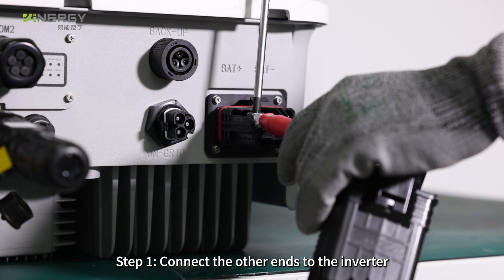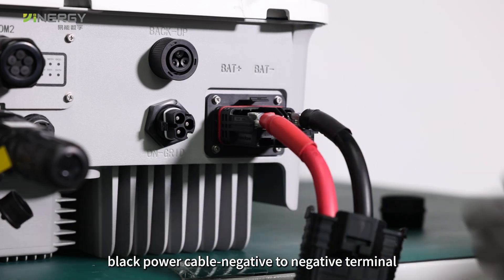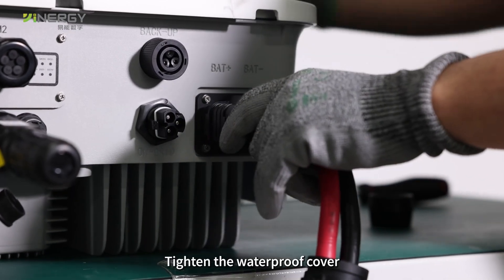Step 1: Connect the other ends to the inverter. Red power cable positive to positive terminal, black power cable negative to negative terminal. Tighten the waterproof cover.